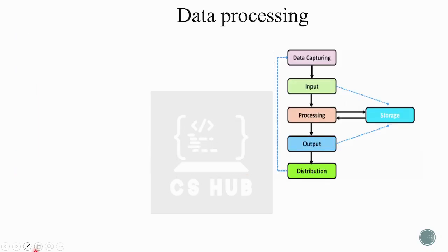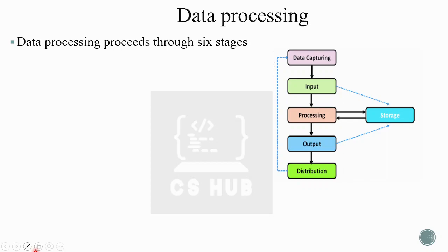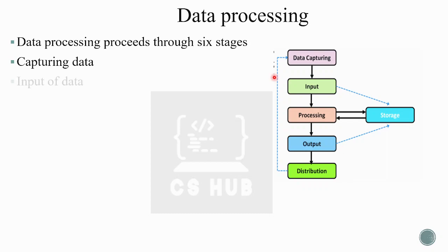This is the stages of data processing. Data processing proceeds through six stages: data capturing, input, processing, output, storage, and distribution. These are the six stages of data processing.